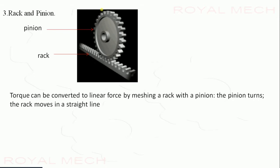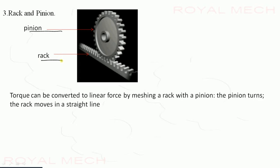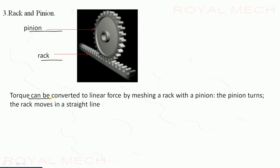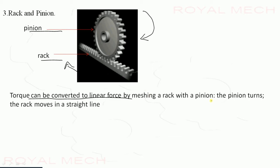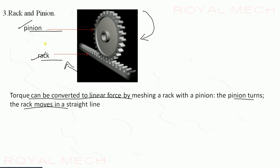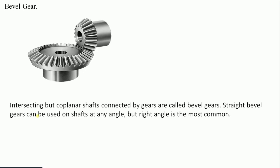In rack and pinion, one portion is called the pinion and the other is called the rack. Torque can be converted into linear force by meshing a rack with a pinion. The rack moves in a straight line when it is in contact with the pinion, as we can see in the animation.